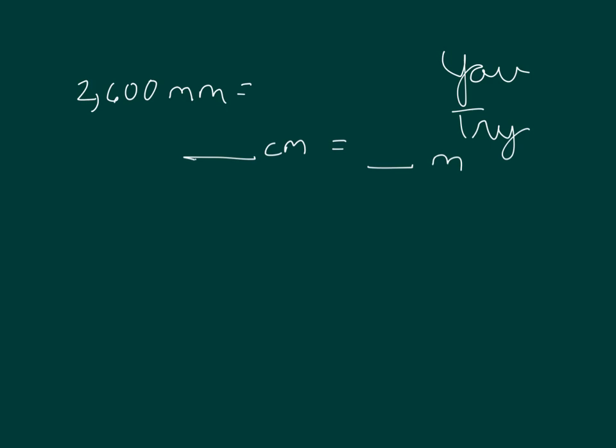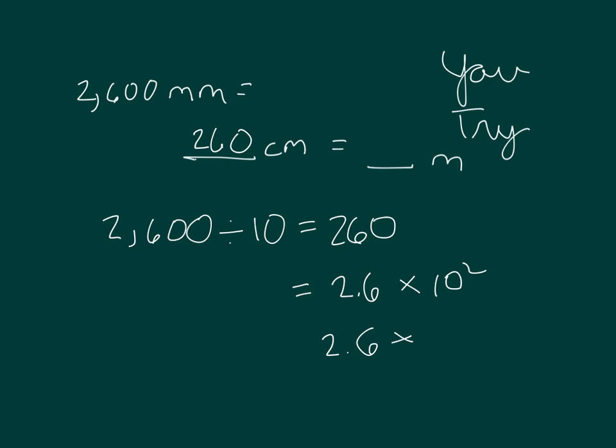Okay, it is your turn to try. Please go ahead and pause the video while you do your work. Did you first divide by 10 to get 260, which you can write as what times 10 squared? Write 2.6 times 10 squared. So be sure to write it both ways with exponents as well. When you divide by 100, you end up getting 2.6.